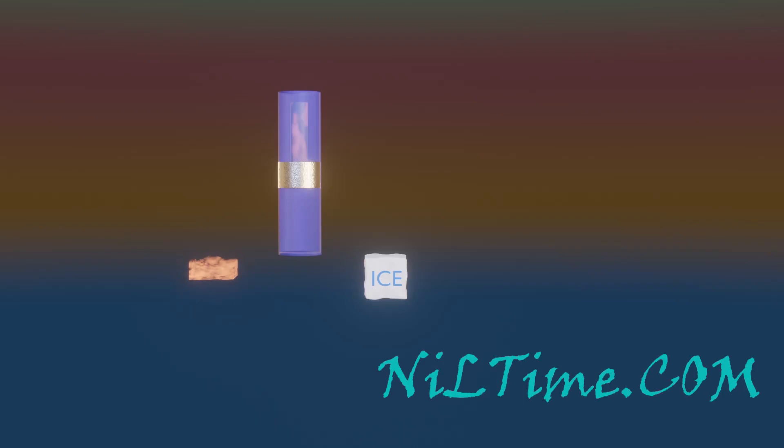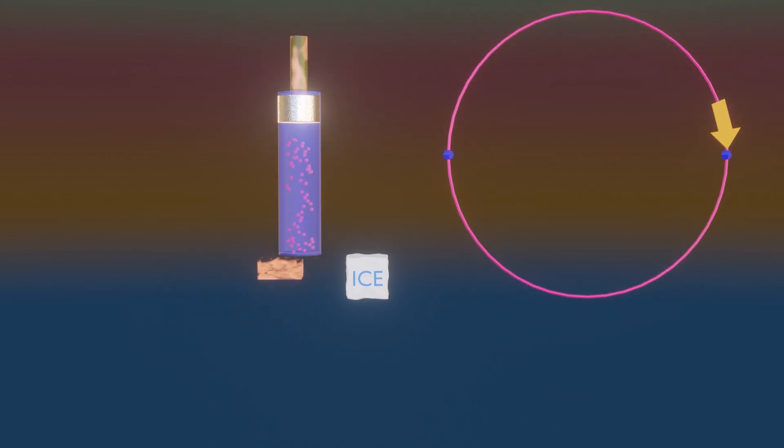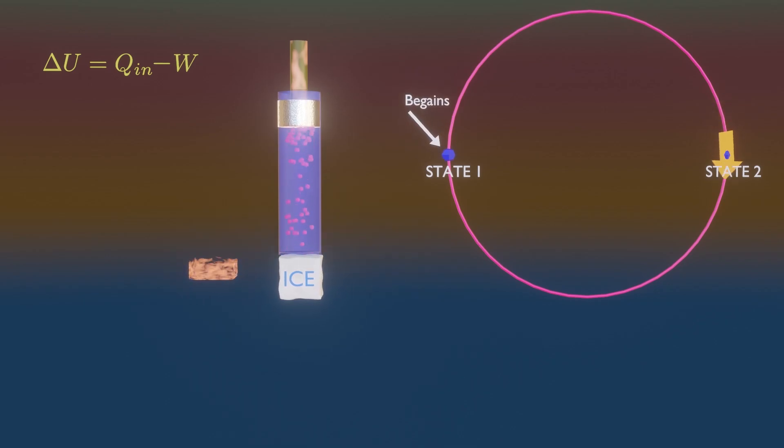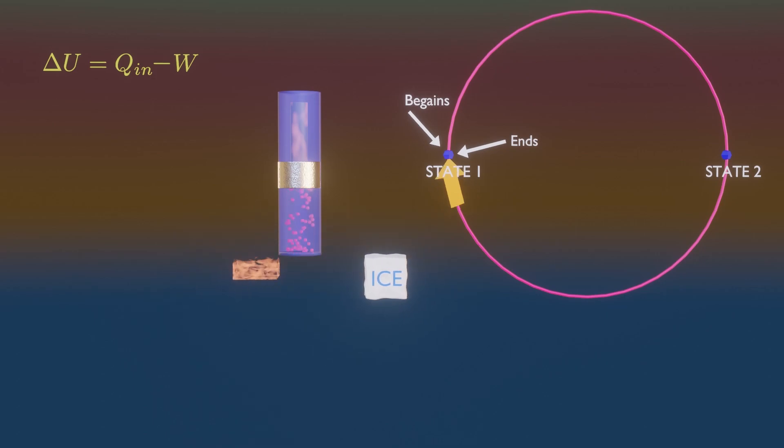To understand the second law of thermodynamics, you have to know what a thermodynamic cycle is. Well, it is a sequence of processes that begins and ends at the same state. Here the properties of the system are the same after the cycle as they were prior.